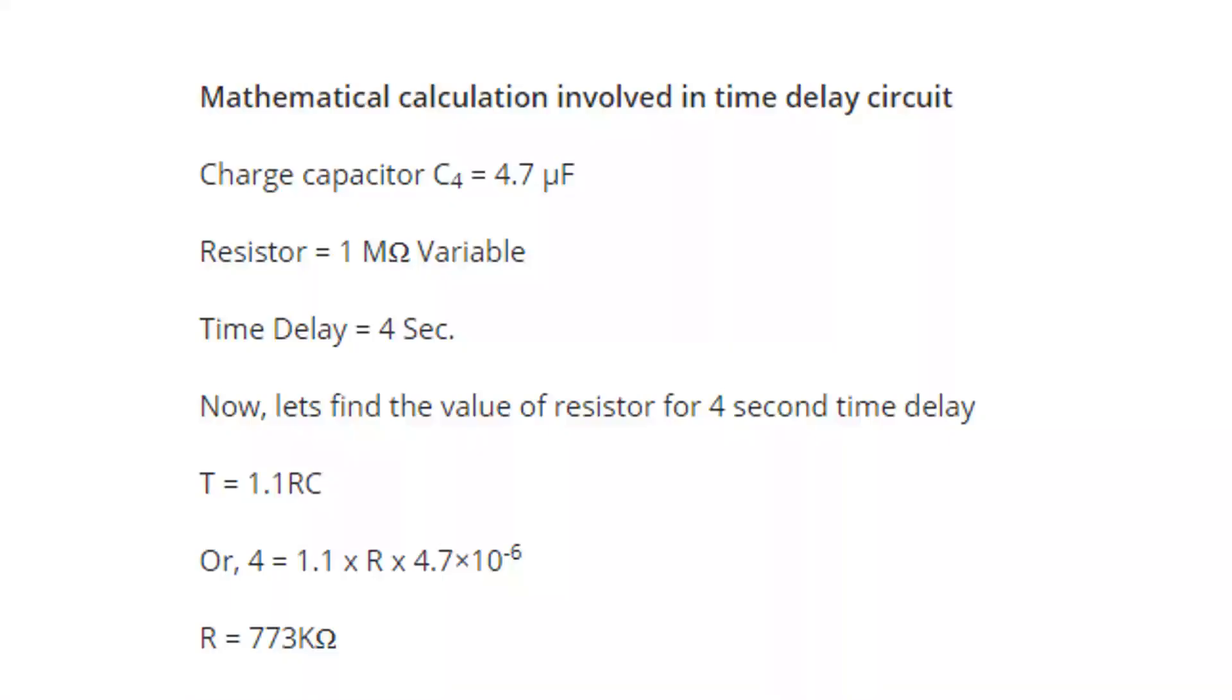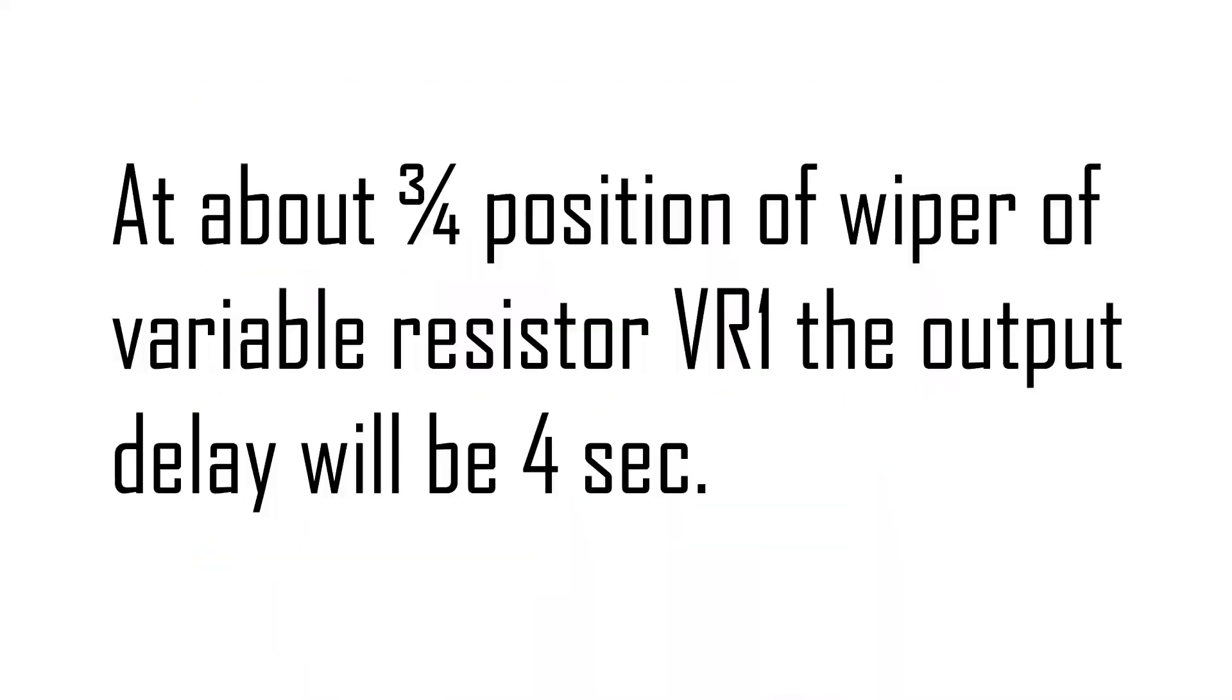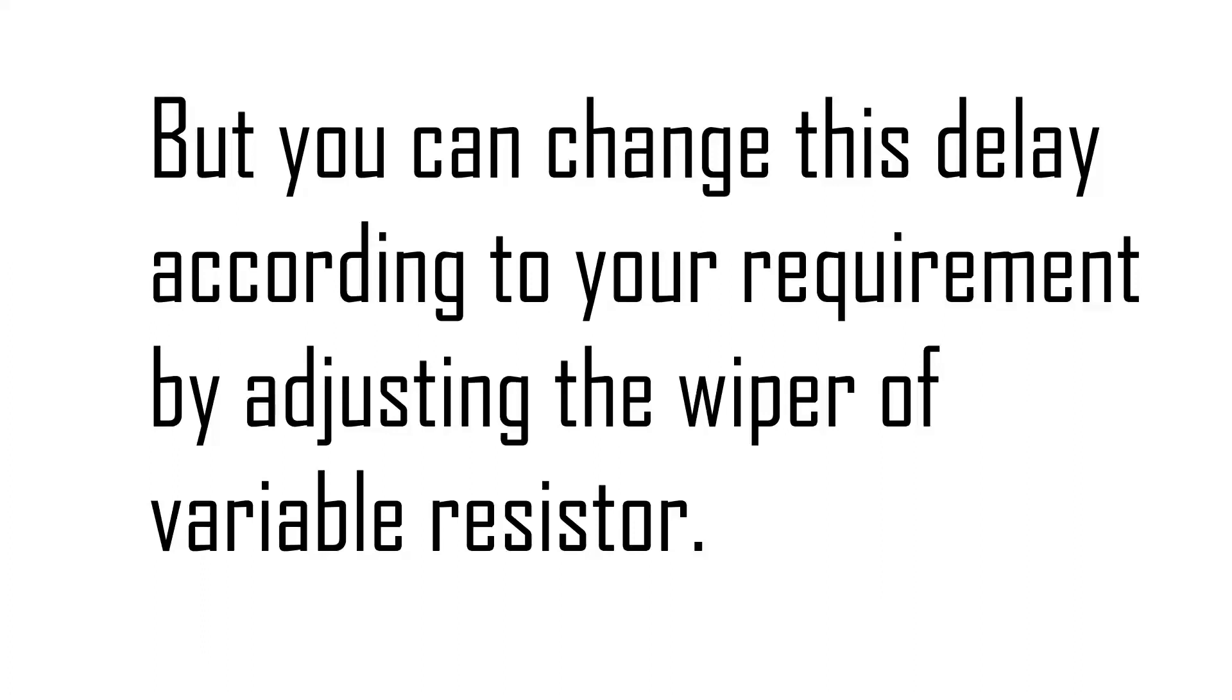Now let's see the mathematical calculation involving time delay circuit. For this prototype, we are using 4 seconds. For that, the capacitance value is of about 4.7 microfarad. The resistance value is unknown. So for that, we are using 1 megaohm variable resistor. Here we see the formula for time delay, T is equal to 1.1 times R times C. Here we had already know the value of T and C. Therefore, we can calculate the value of R, i.e. 773 kiloohm. From above calculation, we conclude that at about 3 by 4 position of wiper or variable resistor BR1, the output delay will be 4 seconds. But you can change this delay according to your requirement by adjusting the wiper or variable resistor.